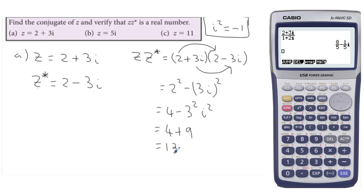So this now is 4 plus 9 equals 13. And we're supposed to verify that that is real. 13 is clearly real.